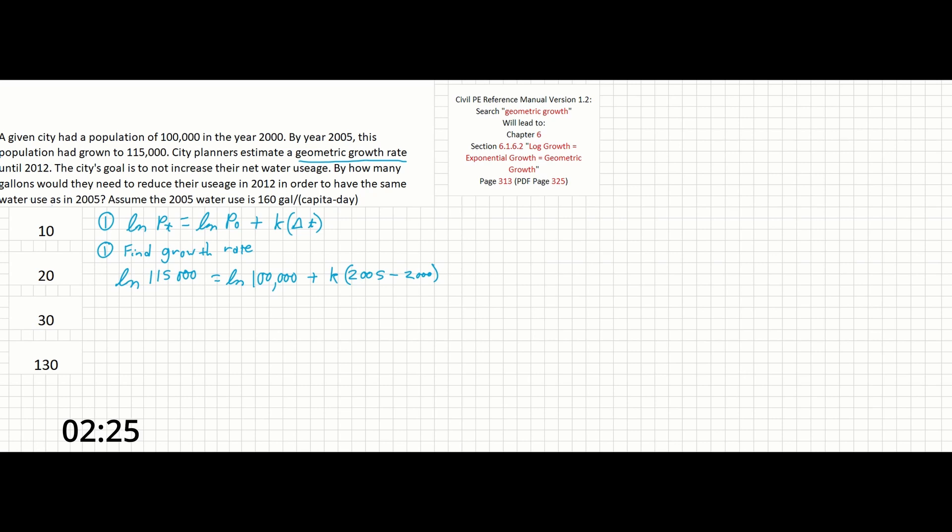So if we use our calculators to get ln of 115,000, we get just about 11.65. And if we do the same thing here, we get just about 11.51. And then this gives us k times 5. Calculating this out, we get a k of just about 0.028. So that is our growth rate.